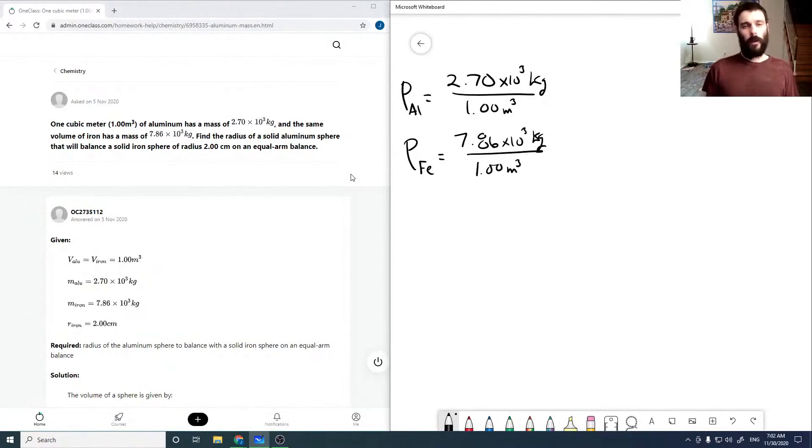And so we're asked to find the radius of a solid aluminum sphere that will balance a solid iron sphere of radius 2 centimeters on an equal iron balance. So we're looking for what radius an aluminum sphere would have to have the same mass as an iron sphere with a radius of 2 centimeters.